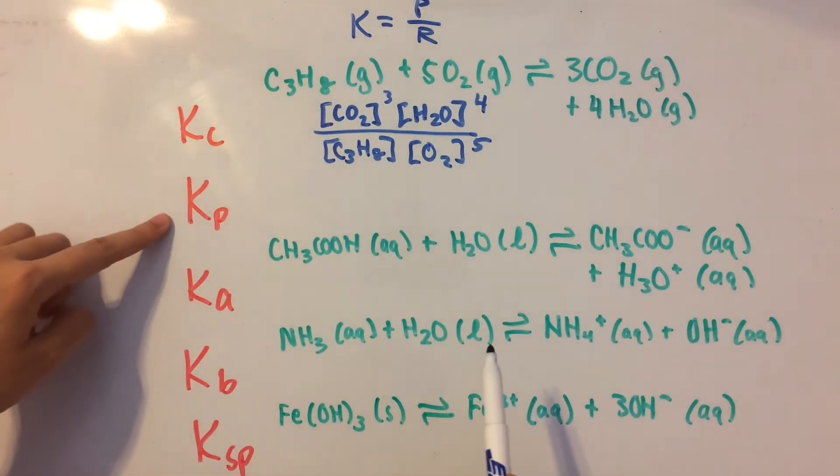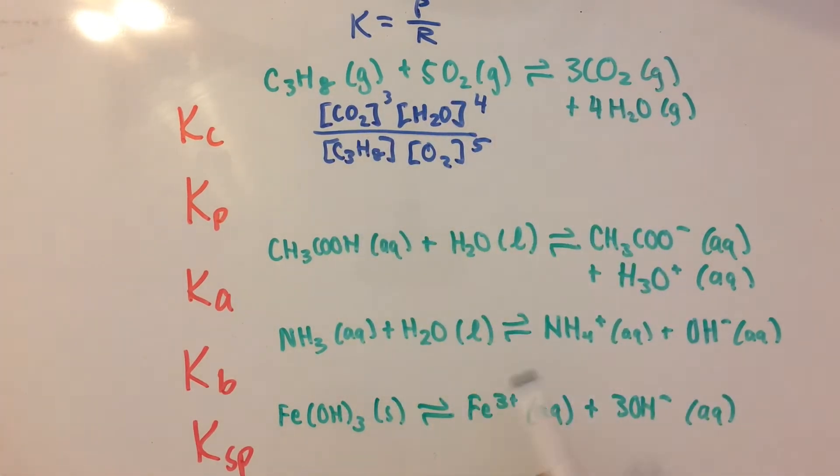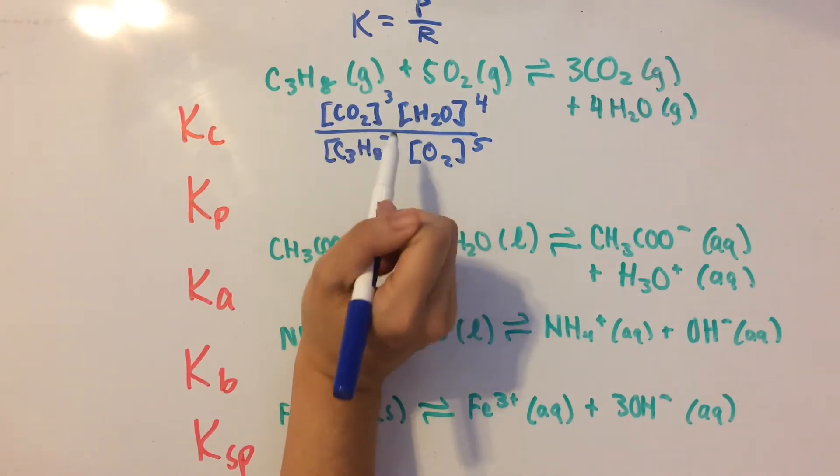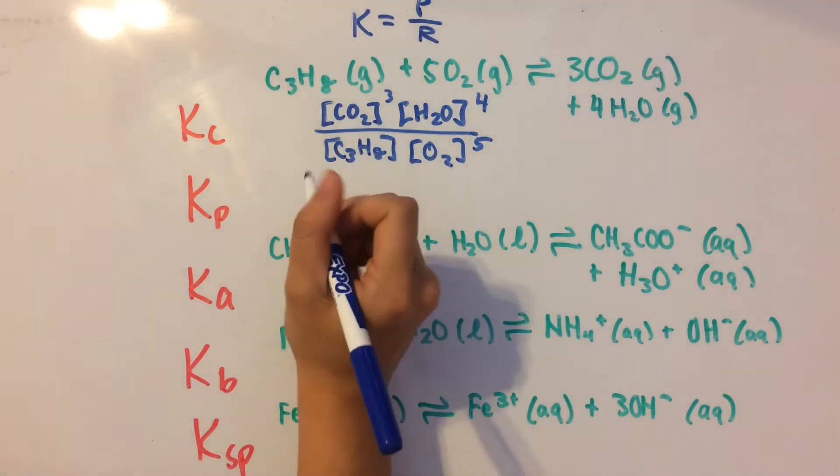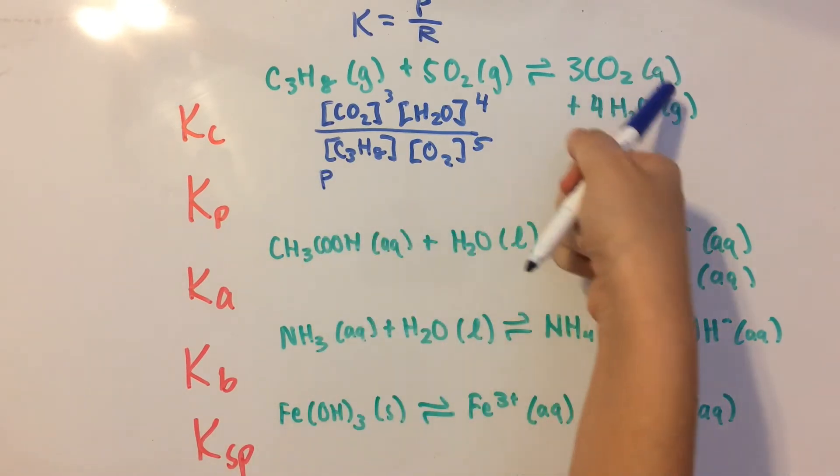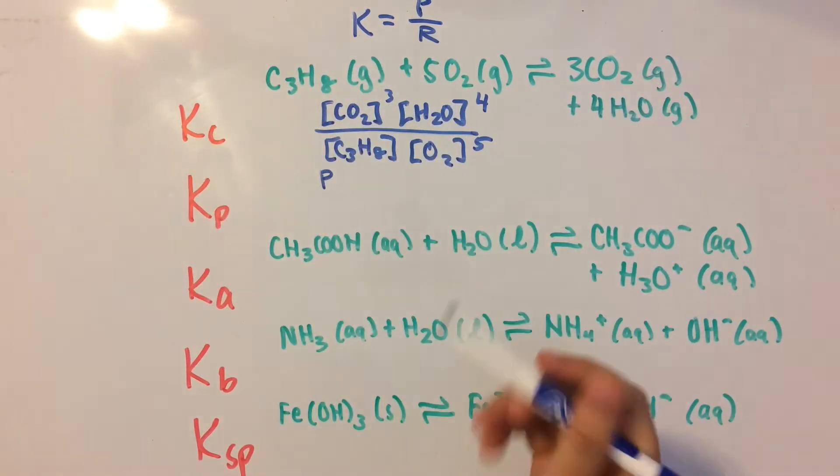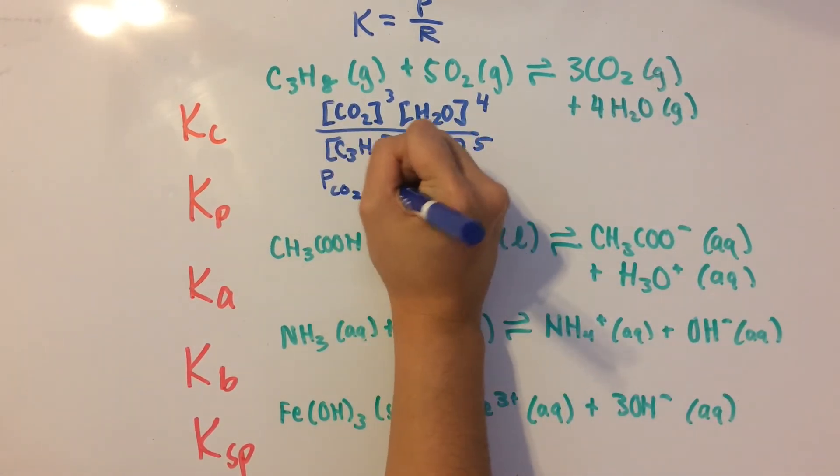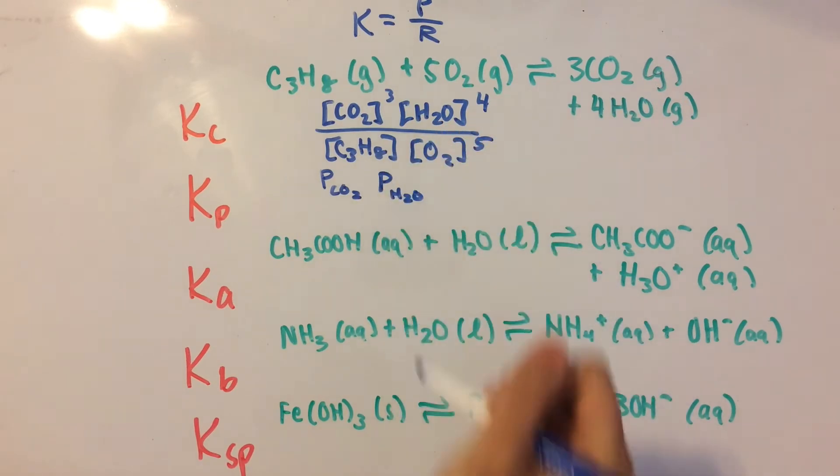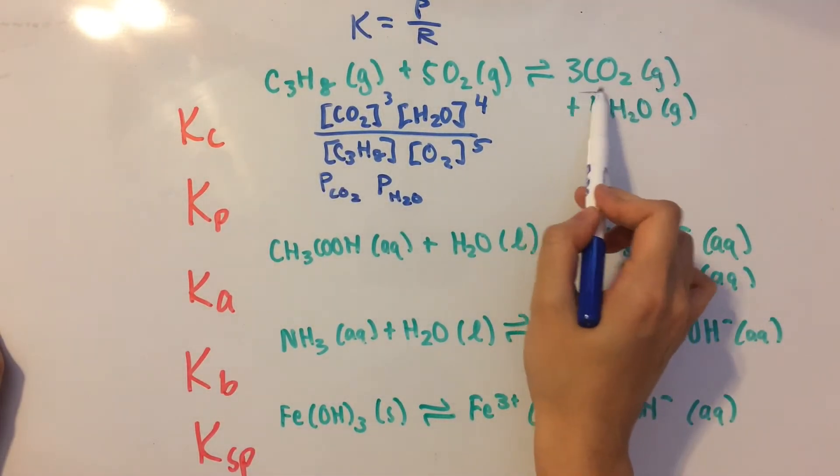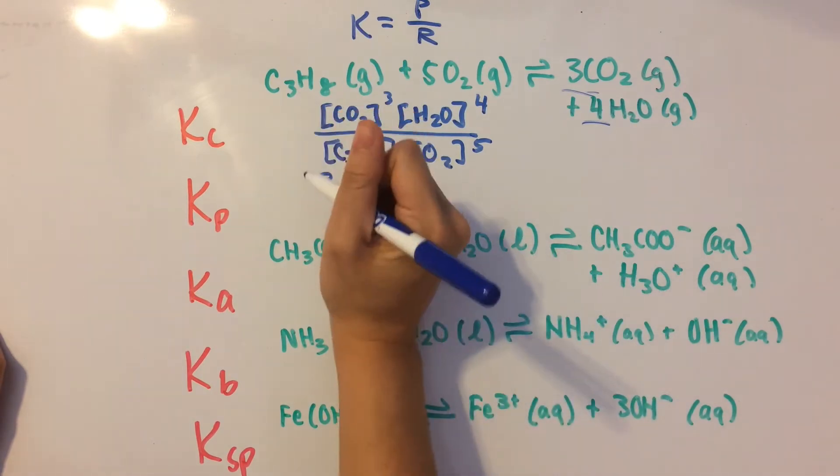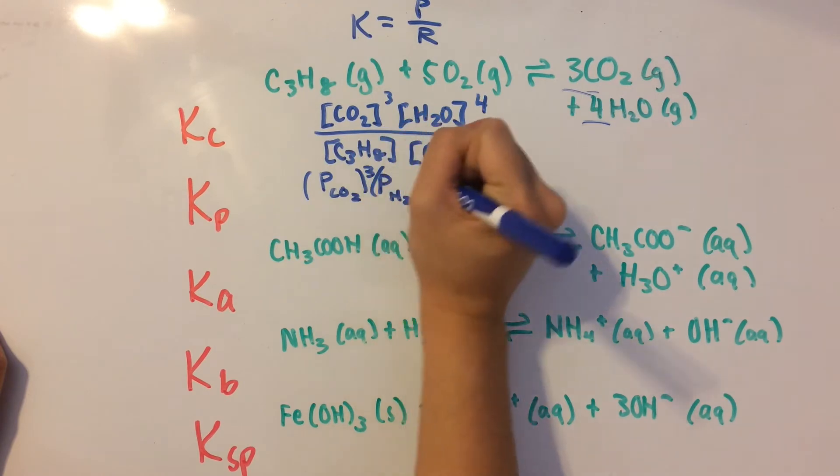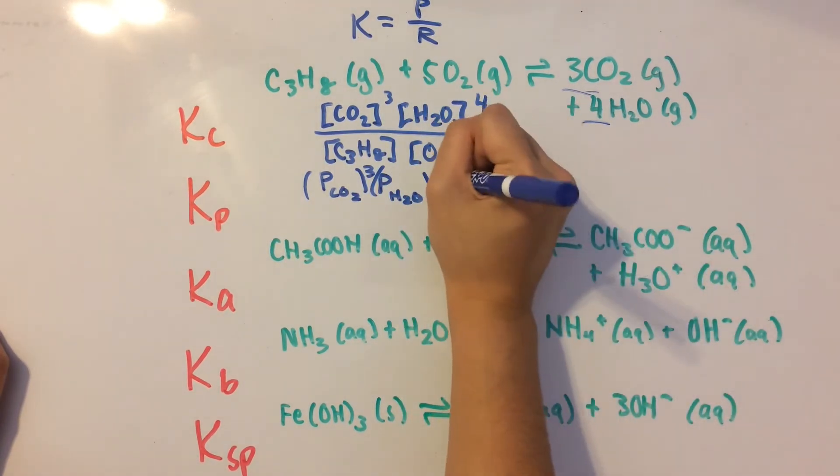Now for Kp, we have all gases, so it makes sense to find the pressure for them. It's going to be basically the same thing as this, except we're going to write out the partial pressure of the products over the partial pressure of the reactants. So we have partial pressure of CO2 and partial pressure of H2O. Now we need to raise them to these powers, three and four, so we're going to have partial pressure of CO2 cubed and partial pressure of H2O to the fourth power.